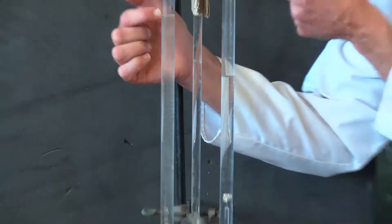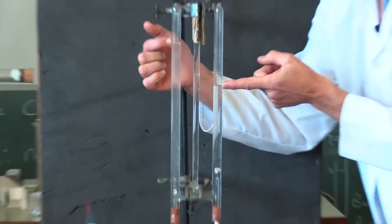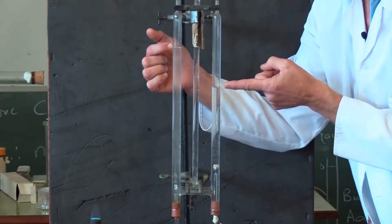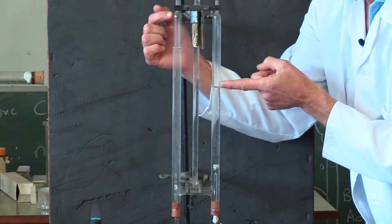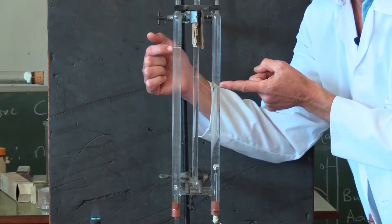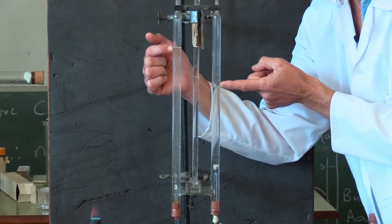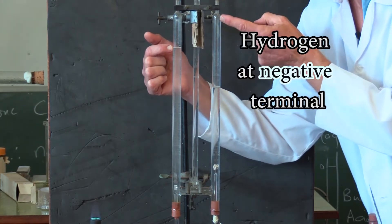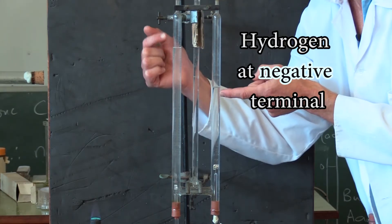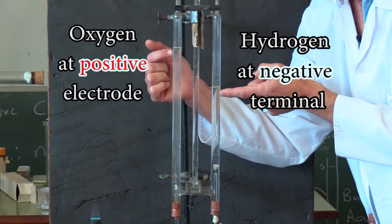We've had enough gas to push this one down to there, and that's at the negative electrode. And we've had on the other side half that amount. And if you remember the formula of water being H2O, clearly this is hydrogen, and there's twice as much as the oxygen on the other side.